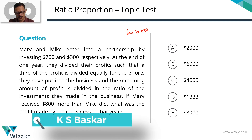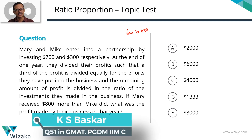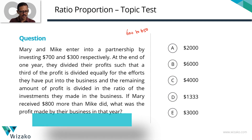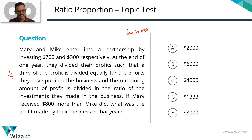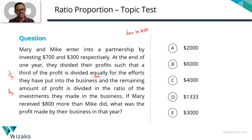Mary and Mike enter into a partnership by investing 700 and 300 dollars respectively. At the end of one year, they divided their profits such that one third of the profit is divided equally for the efforts they put into the business, and the remaining two thirds of the profit is divided in the ratio of their investments, which is 700 to 300.